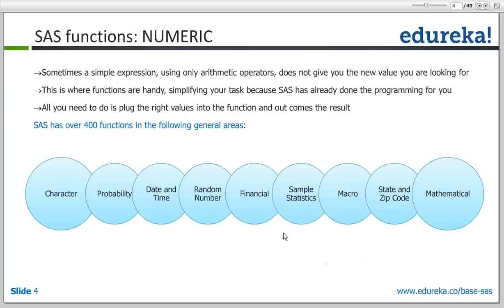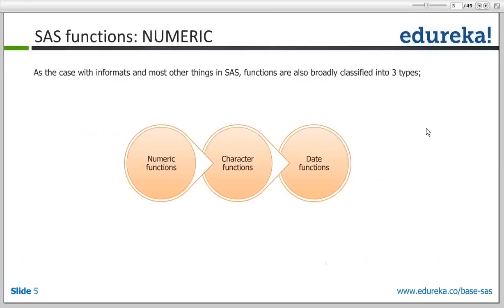There are state and zip code functions - SAS provided a function that works directly on zip codes because there was a need for it. There are also mathematical functions like sine, cosine, tan, and log. Like informats and most things in SAS, functions are broadly classified into three types: numeric functions working on number type data, character functions working on character type data, and date functions working on dates.